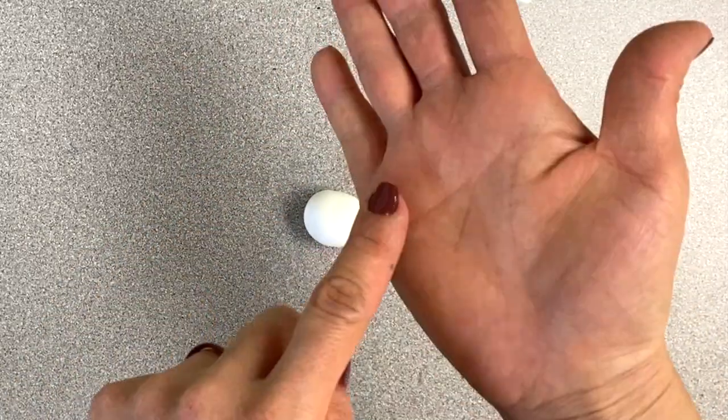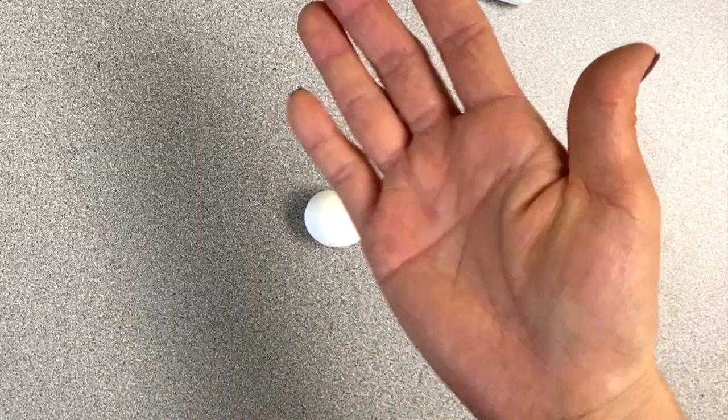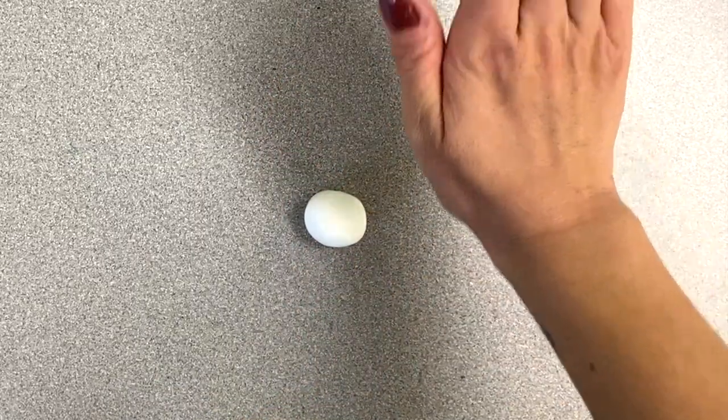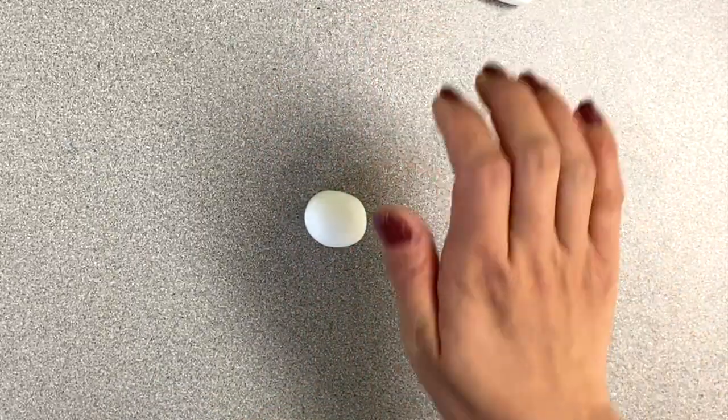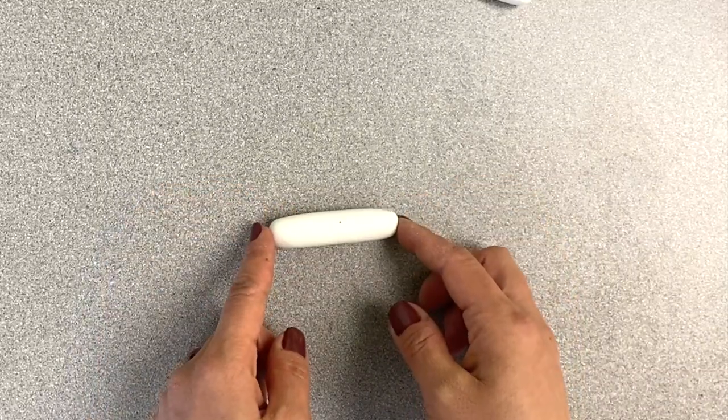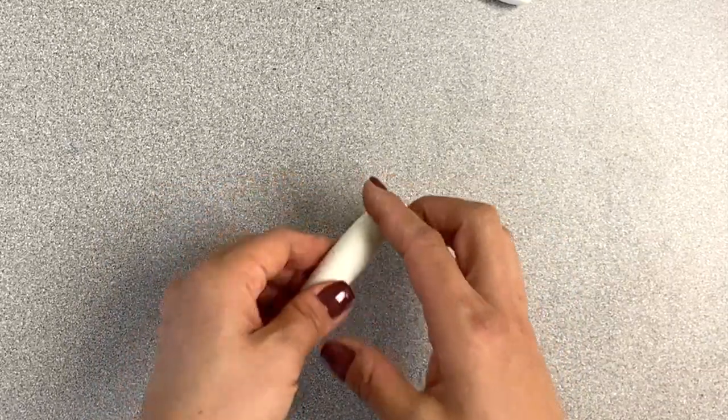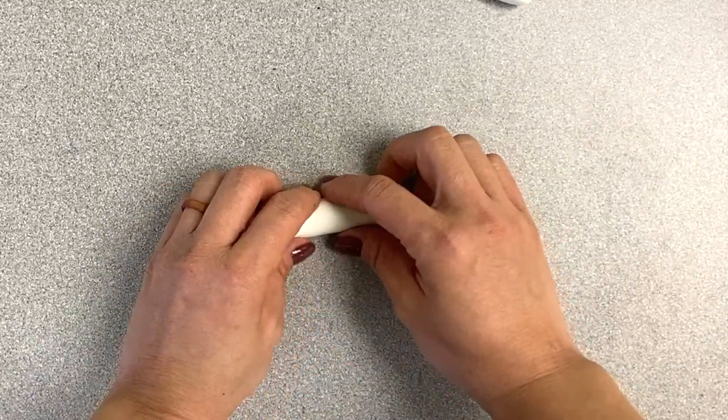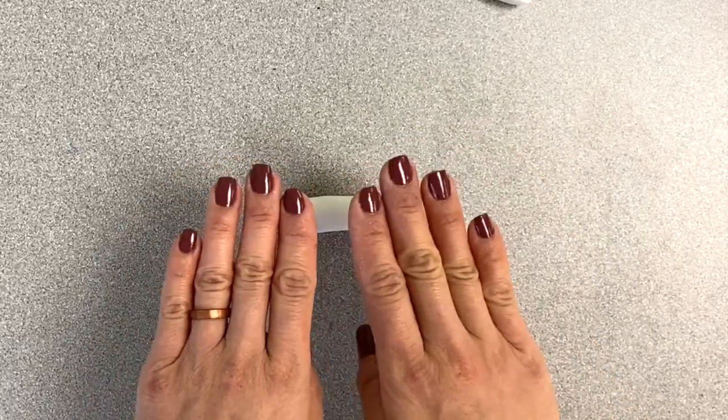Now we're going to use the base of our palm and roll it into a cylinder. So you're going to roll it away from you towards your belly button and away from you then towards your belly button. Keep doing it until it forms into a short cylinder just like that. This is the form that we'll need before we start rolling a coil.